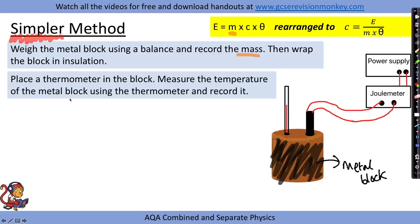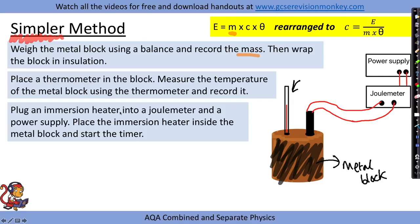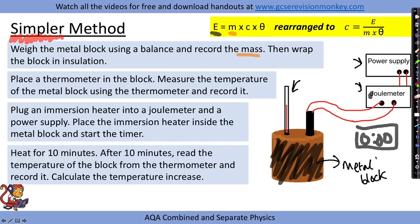We measure the temperature of the metal block using the thermometer and record it — this is our starting temperature. We then put an immersion heater inside the block (called an immersion heater because you immerse it in the substance), plug it into a joule meter, and then into a power supply. We place the immersion heater inside the metal block, start a timer, heat it for 10 minutes, and after 10 minutes read and record the temperature from the thermometer.